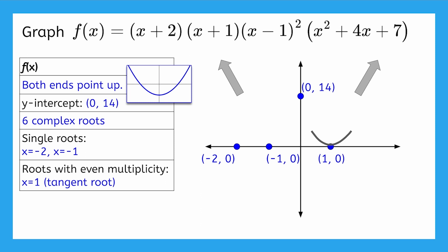The function will cross through the x-axis in this direction at negative 2, 0. Cross through again in this direction at negative 1, 0. Pass through 0, 14. Be tangent at 1, 0. And then continue increasing without bound to the right.